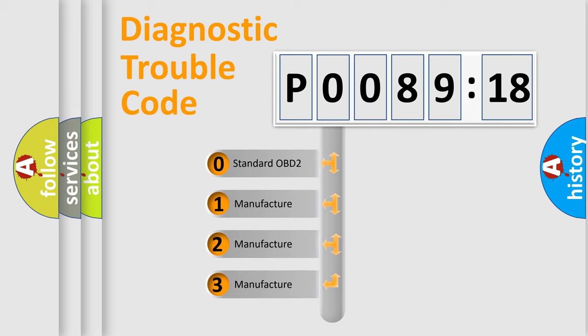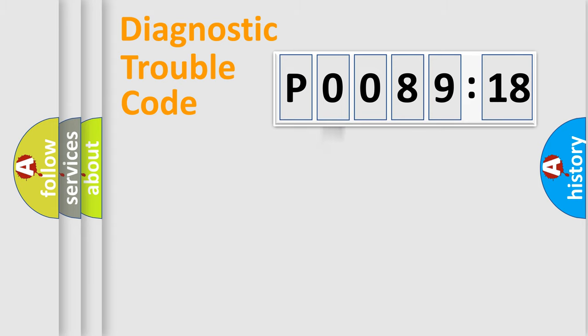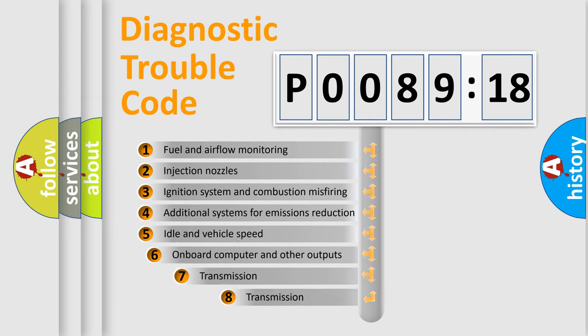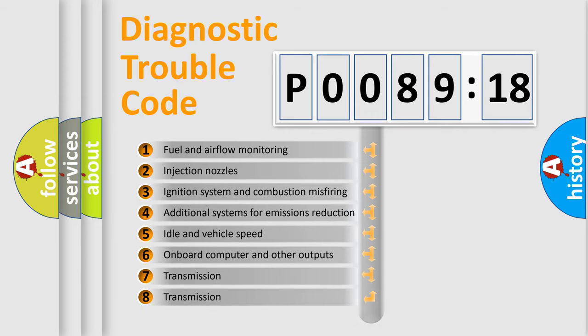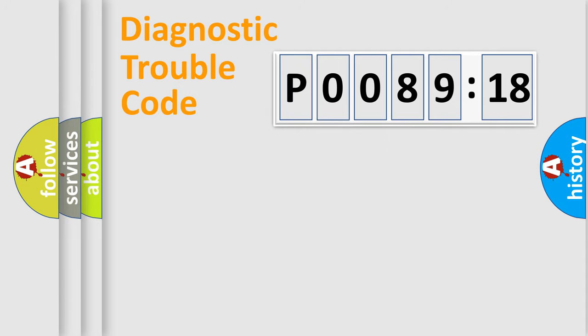If the second character is expressed as zero, it is a standardized error. In the case of numbers 1, 2, or 3, it is a manufacturer-specific error. The third character specifies a subset of errors. The distribution shown is valid only for standardized DTC codes. Only the last two characters define the specific fault of the group.